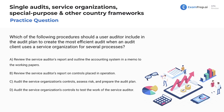Let's run through some multiple choice questions. Which of the following procedures should a user auditor include in the audit plan to create the most efficient audit when an audit client uses a service organization for several processes? Think of ADP for payroll. If they say several processes, they just have multiple third parties for all these business processes. Which is going to be most efficient?